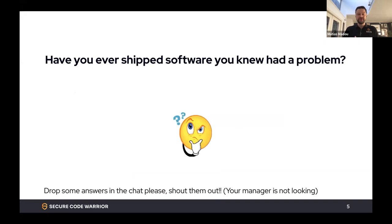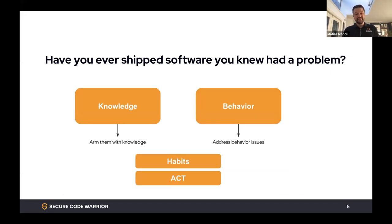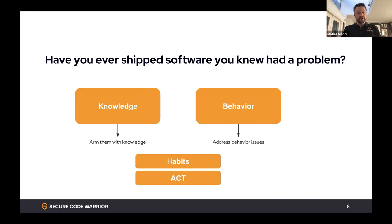My next question: have you ever shipped software you knew had a problem? I know the answer as well — a lot of people say yes, they've shipped software knowing it had a problem. Again, the knowledge was there, but from a behavior perspective, you said you had to reach a deadline, it had to be in production by today. Knowledge and behavior do not line up, and ultimately you create some habits. In this talk I would like to go through knowledge and behavior from a developer perspective and figure out how we are actually creating code today, and how we can work on both to create better code.